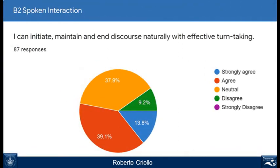Another area where you think you need improvement is related to spoken interaction. A great number of people think they will have problems initiating, maintaining, and managing discourse naturally with effective turn-taking. So this is another area where we could work to improve this perceived weakness.